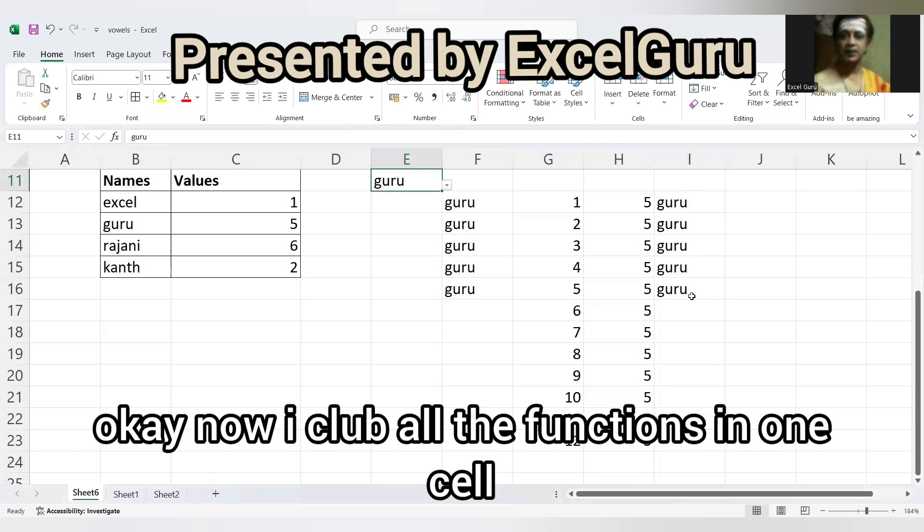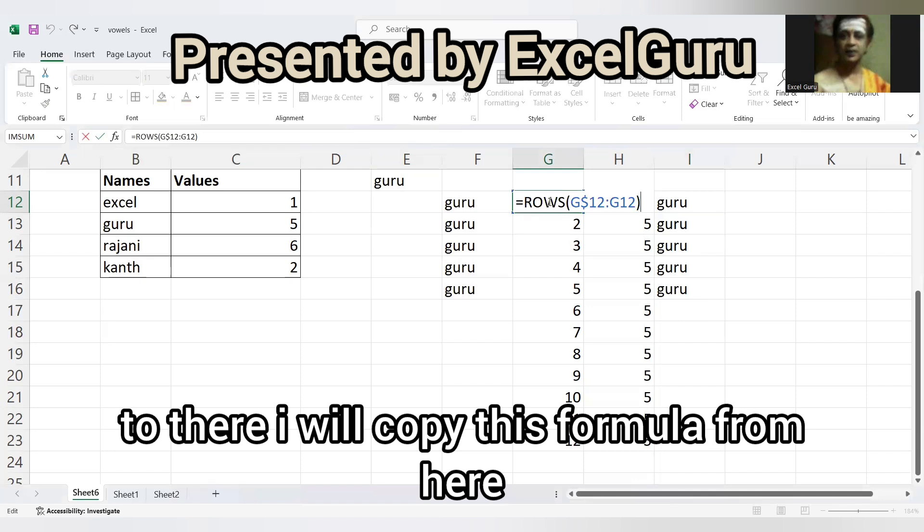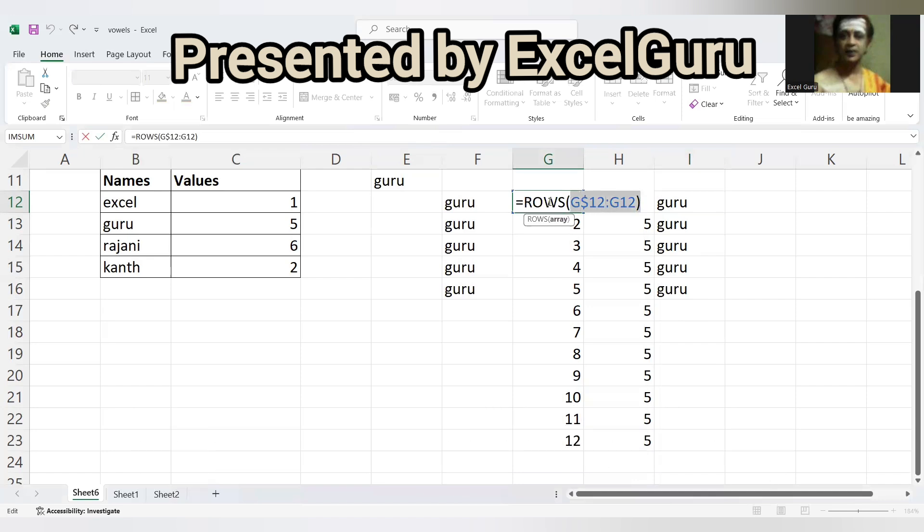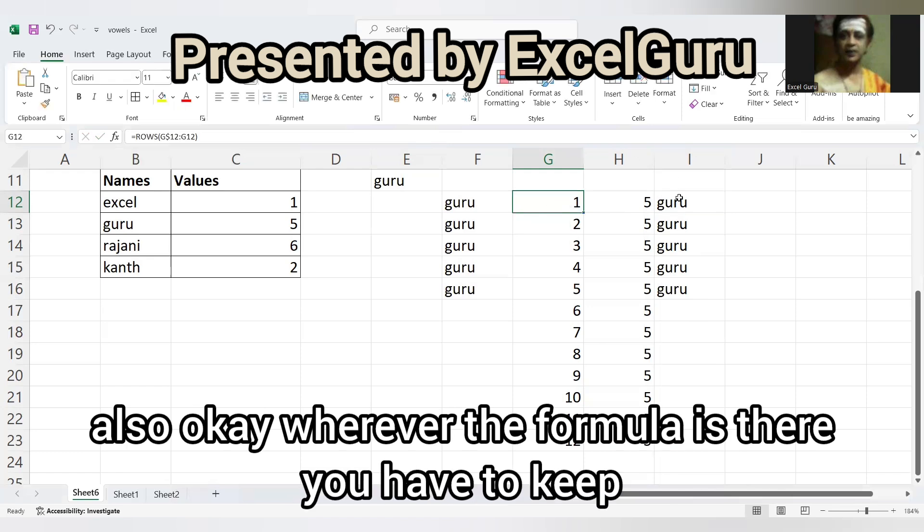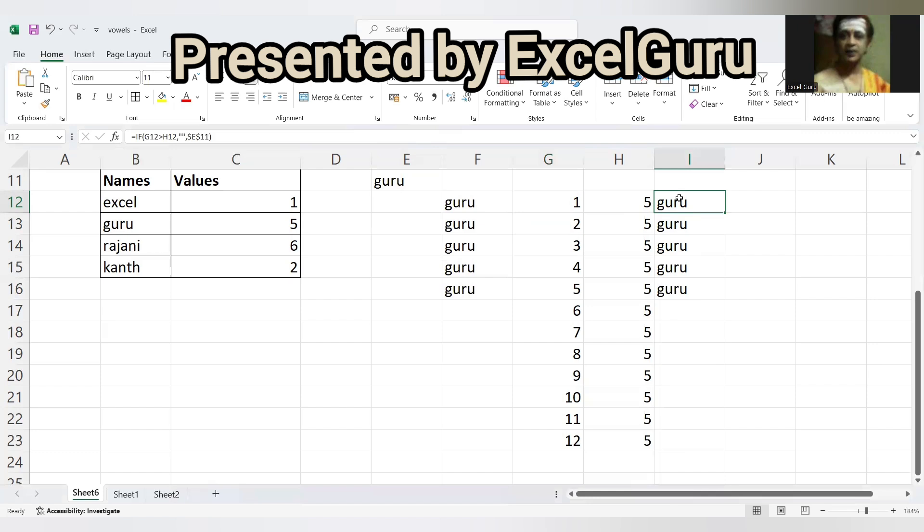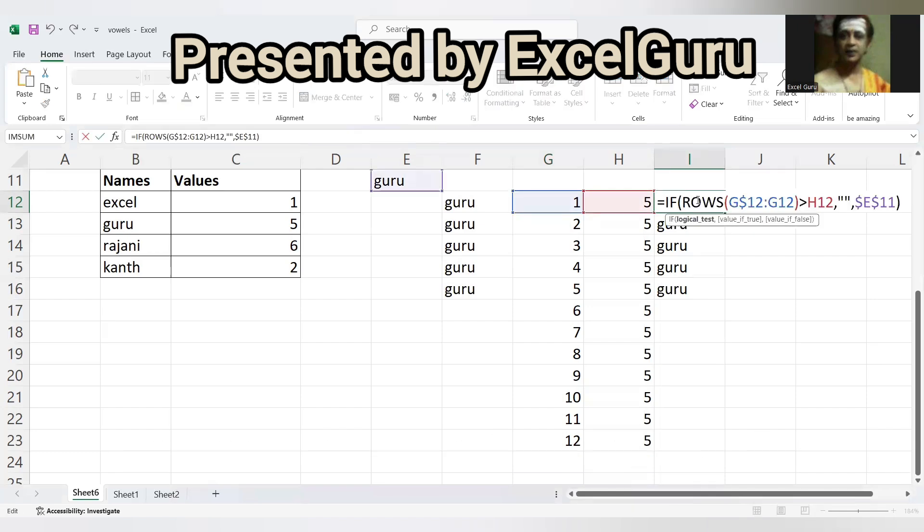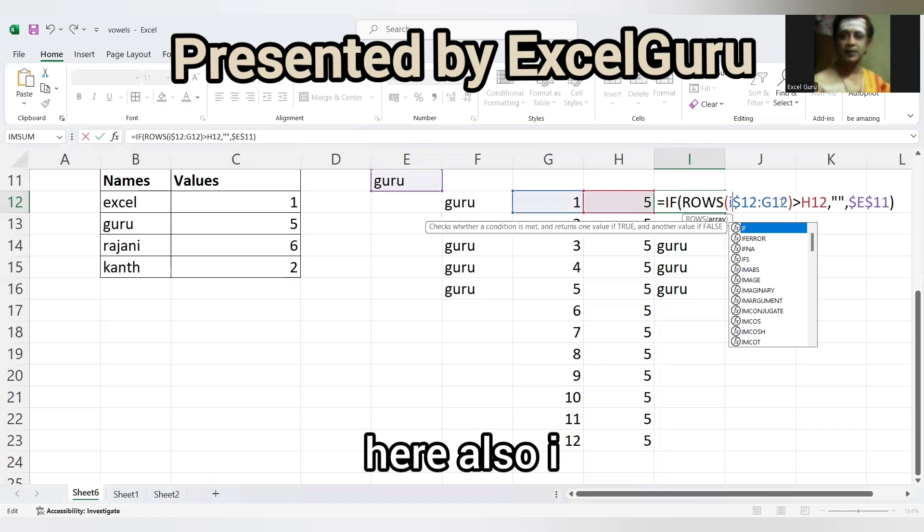Now I'll club all the functions in one cell. F2, first of all before going there I will copy this formula from here and paste it in another cell. Not only that, I will change it like this also, wherever the formula is there you have to keep. See, here the Kant matches, control V.